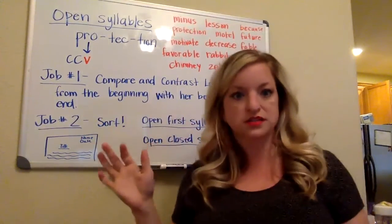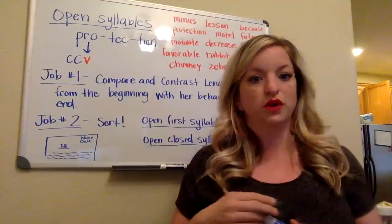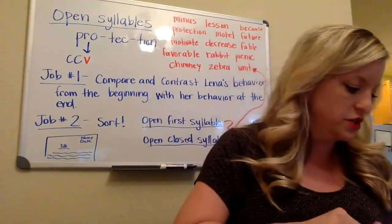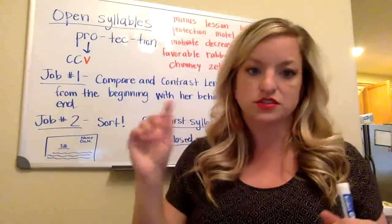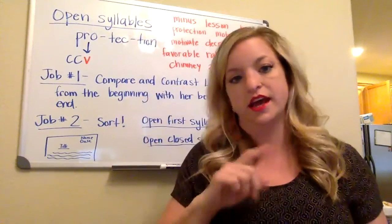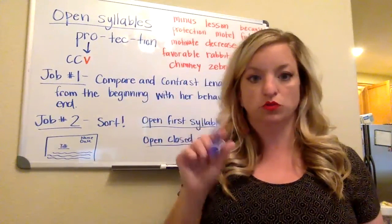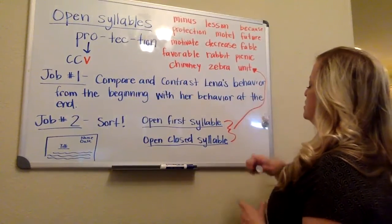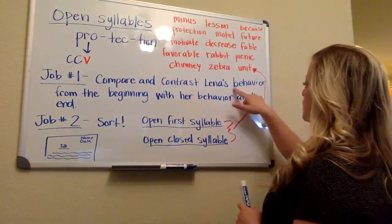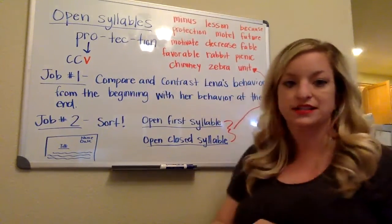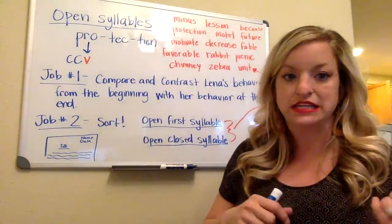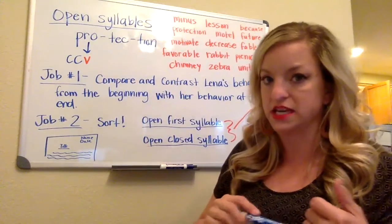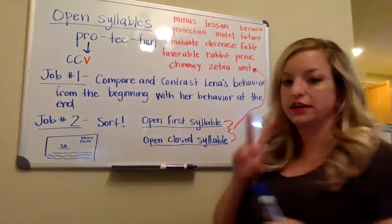For phonics, you should also go through the story 'Half Empty or Half Full' and circle, underline, or highlight any open syllable words. For example, the word 'behavior' — that first syllable 'be' has an open syllable where the E is saying its name; it is a long vowel sound.